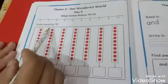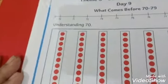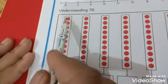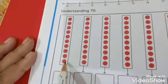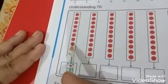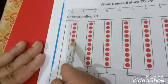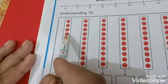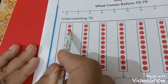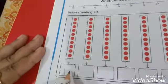Now we will understand what is 70. This is one tenth. See there are 10 dots in this block. 1, 2, 3, 4, 5, 6, 7, 8, 9, 10. One tenth means 10.